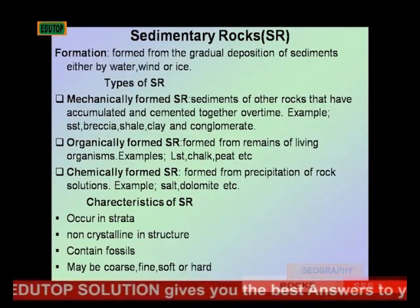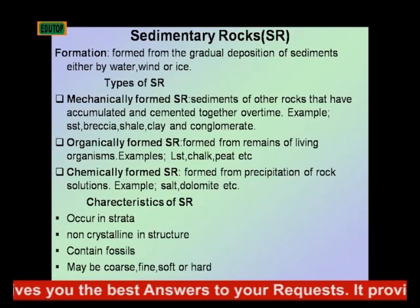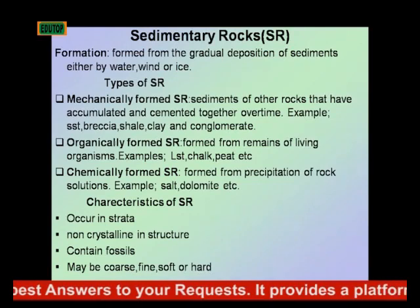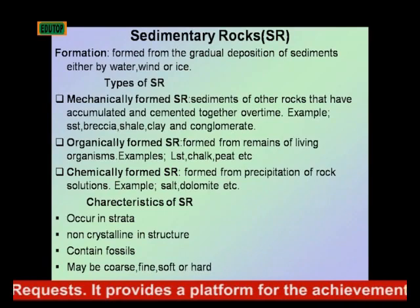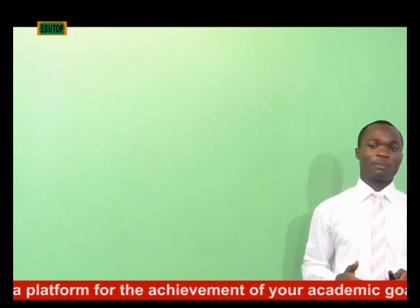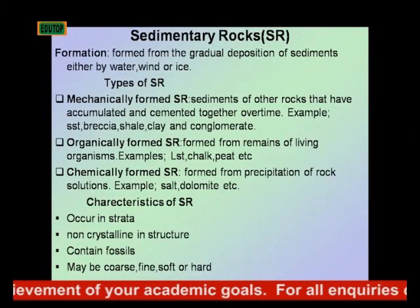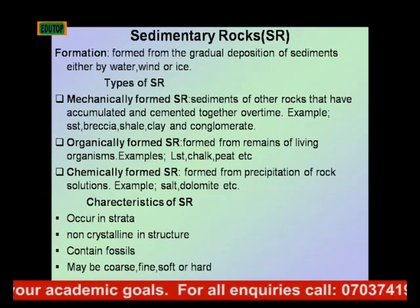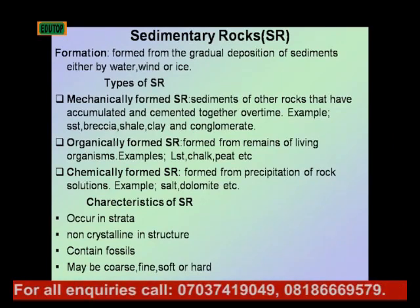We also have the organically formed sedimentary rock. Organically formed sedimentary rocks are formed from the remains of living organisms. Examples include limestone, chalk, and peat. Finally, we have chemically formed sedimentary rock, which are formed from the precipitation of rock solutions such as salt, dolomite, etc.